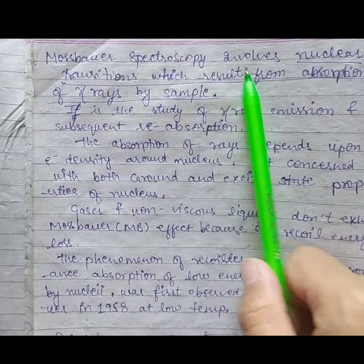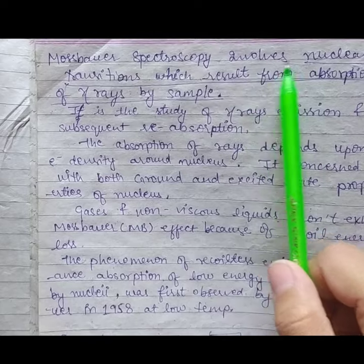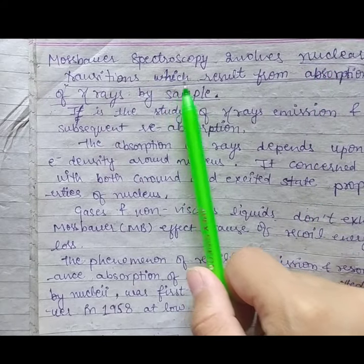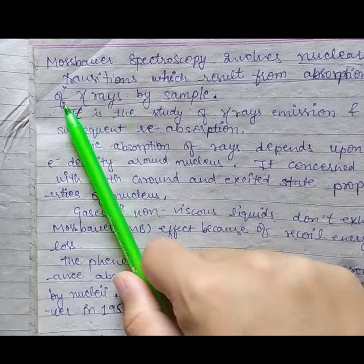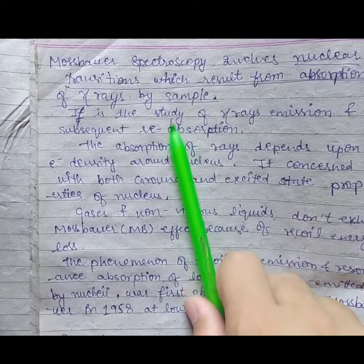Mössbauer spectroscopy involves nuclear transition which results from absorption of gamma rays by sample.